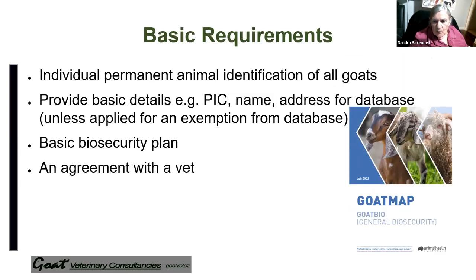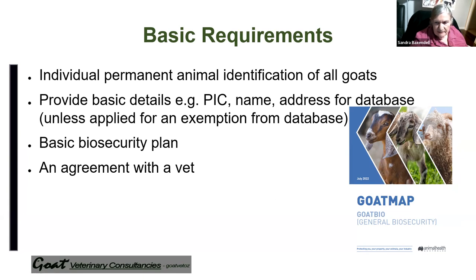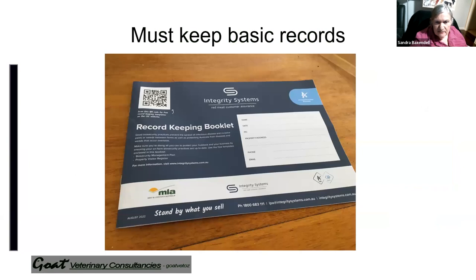The basic requirements for the general biosecurity MAP are things that you need to do anyway. You've got to have all your animals permanently identified once they're over three months of age. You must provide the basic details — your property identification code or biosecurity entity number, name, and address for the database. You can apply for an exemption from the database if you wish. Then you've got to have a basic biosecurity plan, and you must have an agreement with your vet. Meat and Livestock Australia through the integrity systems have a record-keeping book that would get you a fair way along for the basic record-keeping.